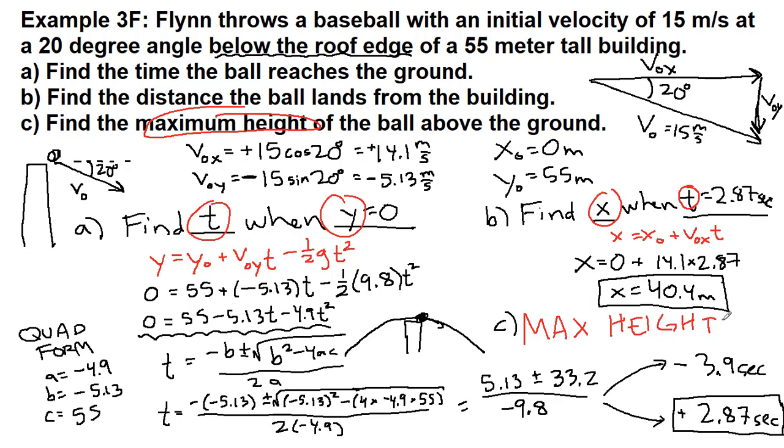We don't want to default to throwing numbers into equations because that's what we think physics is all about. Physics is about problem solving, and if we are standing on the top of a building and throwing downwards, it will never get higher than where it started. The maximum height is 55 meters by definition.